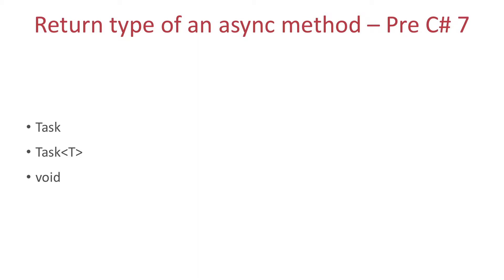The point here is that the return type of an async method where you really returned something had to be Task<T>. And Task and Task<T> are reference types. The problem with Task and Task<T> in some special edge cases is that every time an async method returns, a task is allocated on the heap.